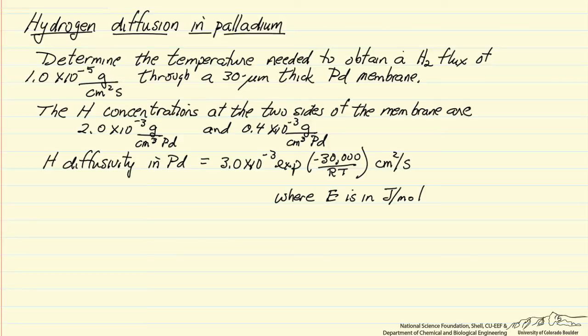In this problem we are going to look at diffusion of hydrogen through palladium. This is one method that can be used to purify hydrogen from a mixture, and what we want to determine is how hot do we have to heat this palladium membrane that is 30 microns thick in order to obtain a hydrogen flux of 10 to the minus 5 grams per square centimeter per second.